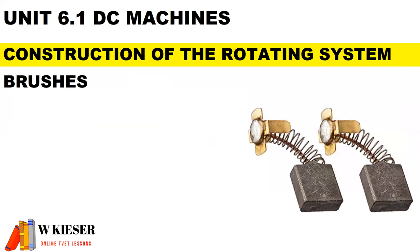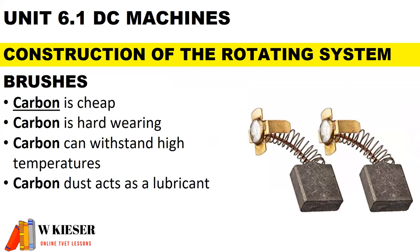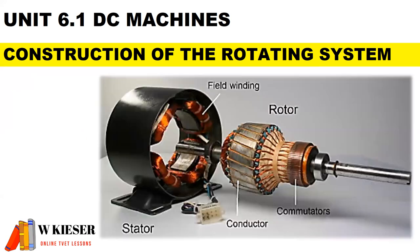For brushes, there are two main types: carbon and graphite. For carbon brushes, the reason why manufacturers like to use carbon is that carbon is cheap, hard wearing, it can withstand high temperatures, and the dust acts as a lubricant.